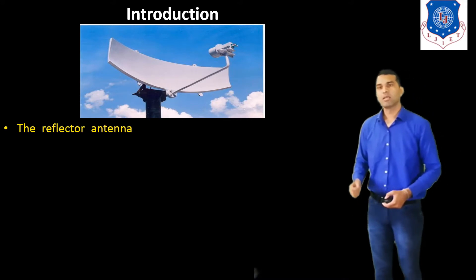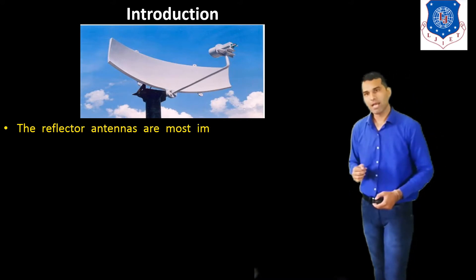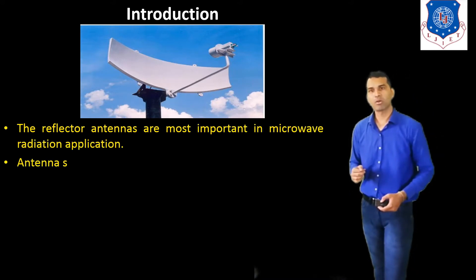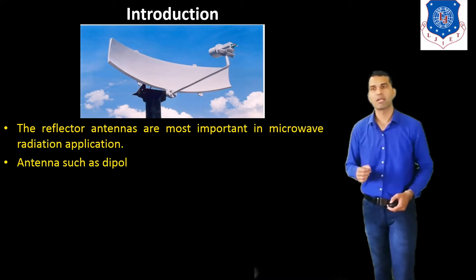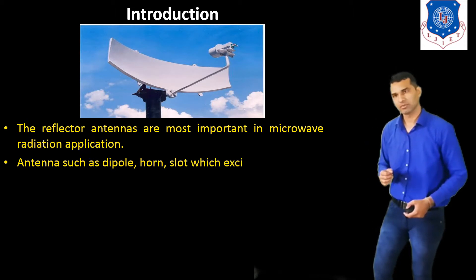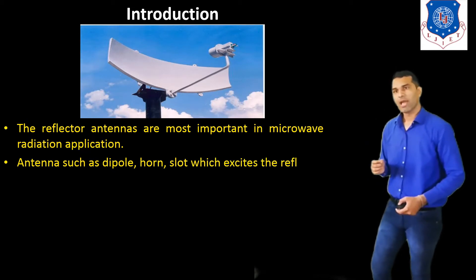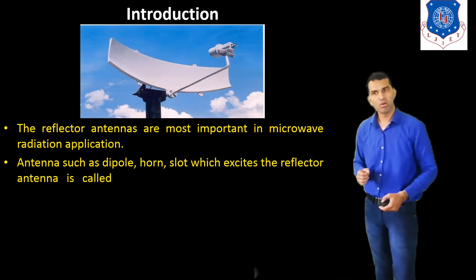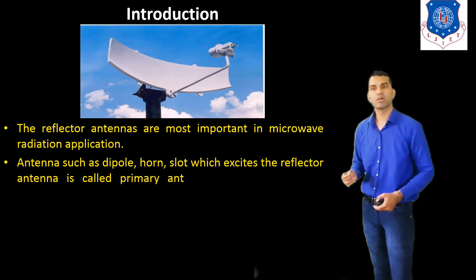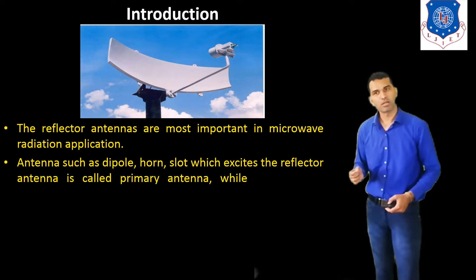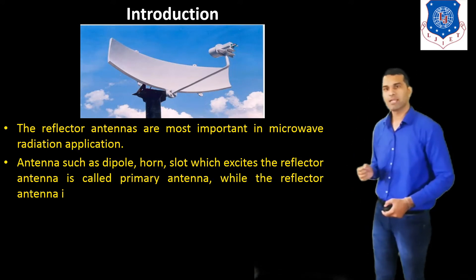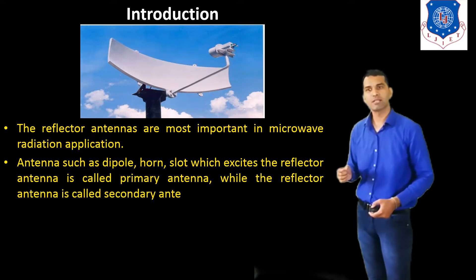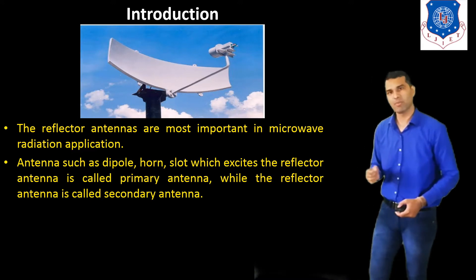The reflector antenna are most important in microwave radiation applications. Antennas such as dipole, horn, and slot, which excite the reflector antenna, are called the primary antenna.